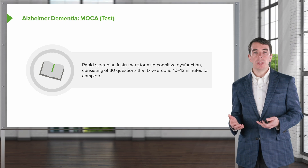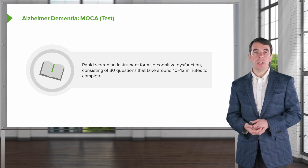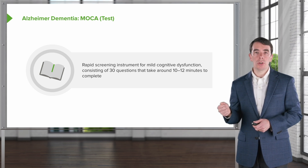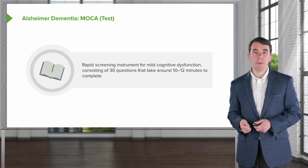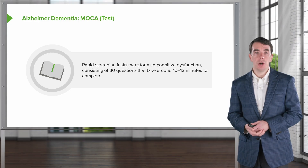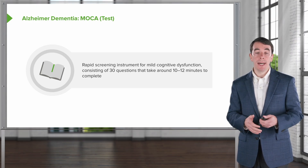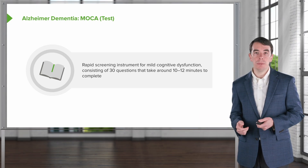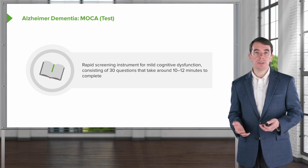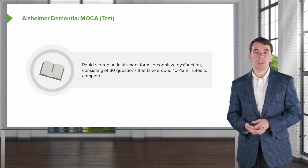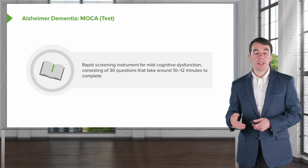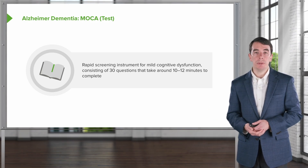Now let's turn to the MOCA — the Montreal Cognitive Assessment — which is really the workhorse in terms of bedside testing of cognitive function. This is a rapid screening instrument for mild cognitive impairment as well as advanced dementia. It consists of 30 questions, takes about 10 to 12 minutes to complete, and can be easily incorporated into a clinic visit or an inpatient hospital examination.